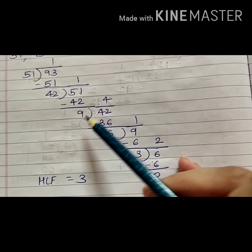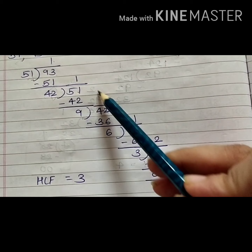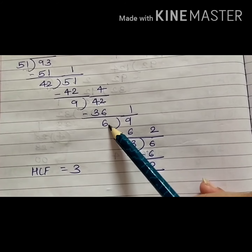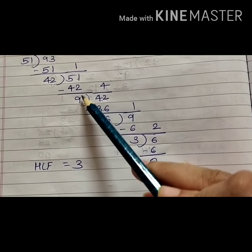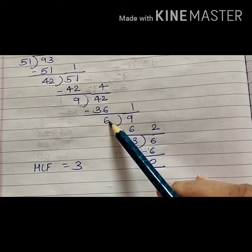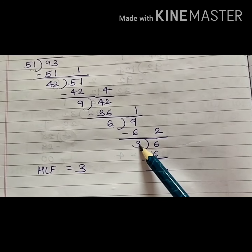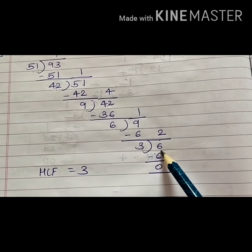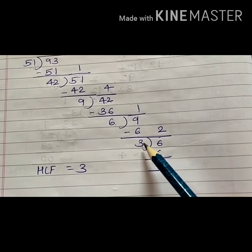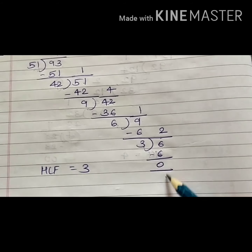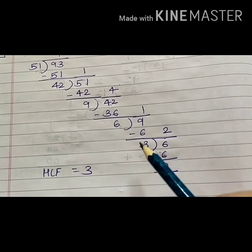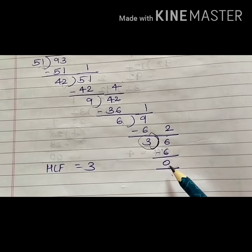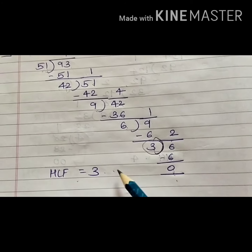So 9 will be my divisor and the previous divisor 42 will be my dividend. 9 fours are 36; I get remainder 6. I bring 9 down as the dividend — 6 ones are 6; I get 3 as the remainder. 3 will be my next divisor and the previous divisor will be the next dividend. Finally, 3 twos are 6 and I get remainder 0. Here 3 is the divisor giving remainder 0, so HCF is equal to 3.